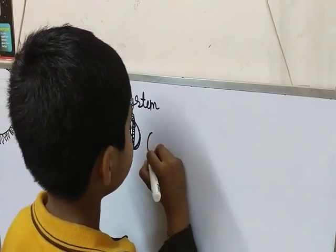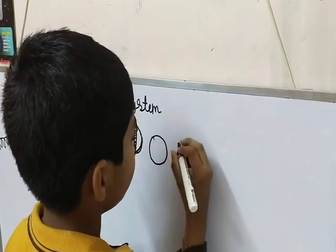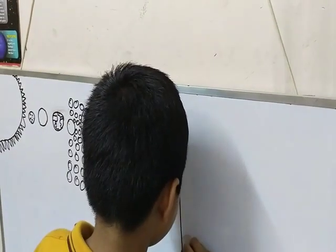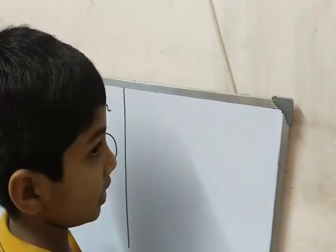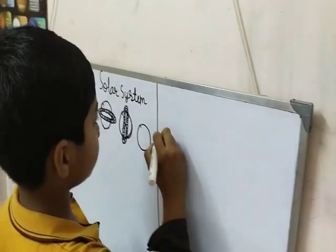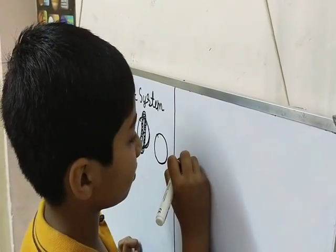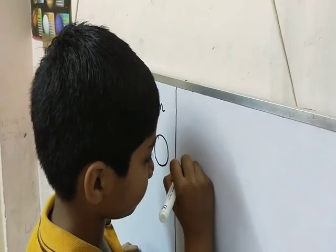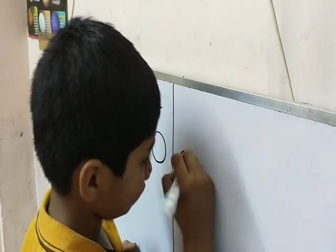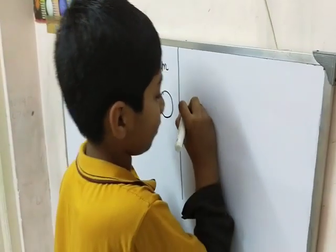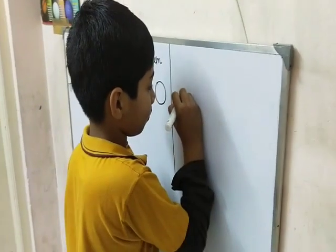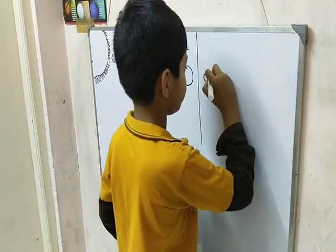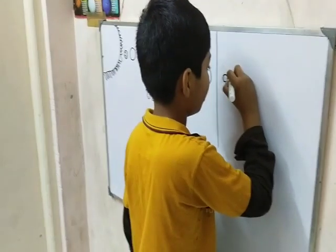Now this is Neptune. So I am going to draw the dwarf planets now. This is really small.